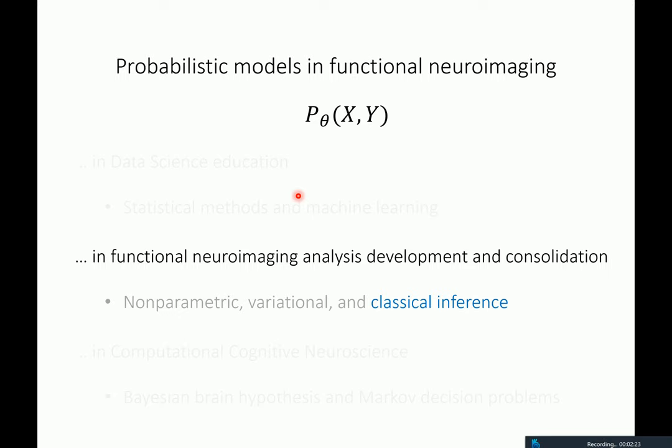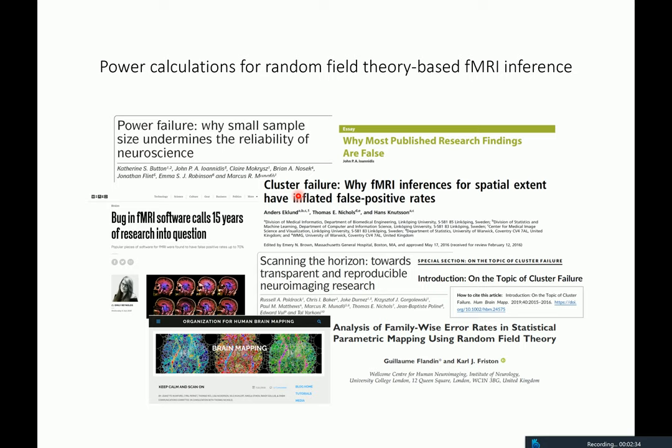The first example I want to discuss is one where we investigated classical inference in a functional neuroimaging analysis. This work is called Power Calculations for a Field Theory fMRI Experiment, and it's about classical inference. I'm somewhat surprised to be talking about classical inference in 2019, because when I first started in neuroimaging around 2006, I thought classical inference would be a thing of the past by the end of my PhD.